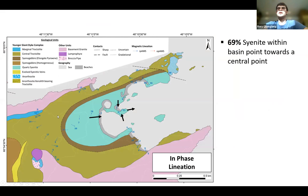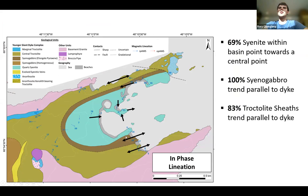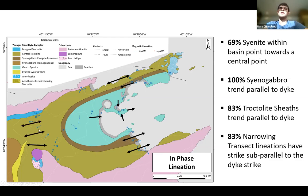Quickly looking at the lineations now, in the syenite, it's a majority, but loosely, which point towards the central point. So this is almost like a canoe-like basin, they point along the keel and facing down. And then almost all of the syenogabbro and the majority of troctolites are parallel to the dike trend, and this is also reflected in the narrowing.